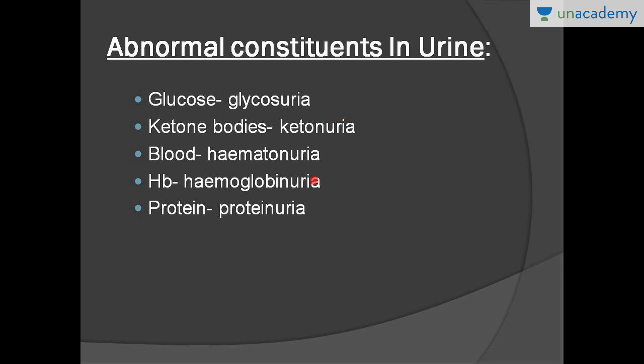Then we have blood in urine, which is called hematuria. What does it signify? It can signify many things — any pathology in the kidney like glomerulonephritis, some trauma to the kidney, trauma to the ureter, or even to the urinary bladder or urethra. So it can be present in various cases.